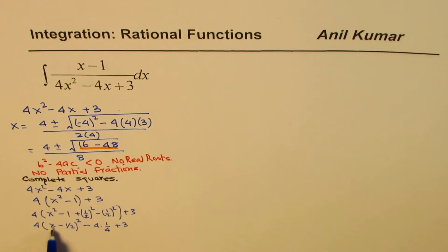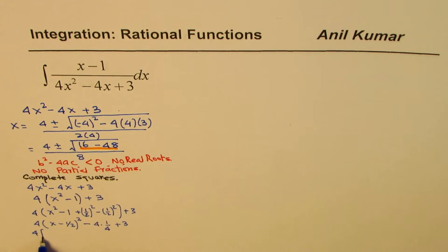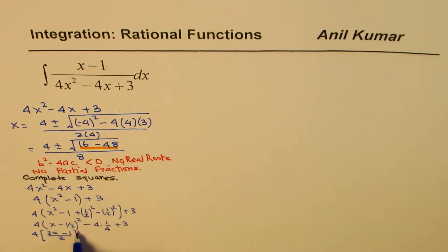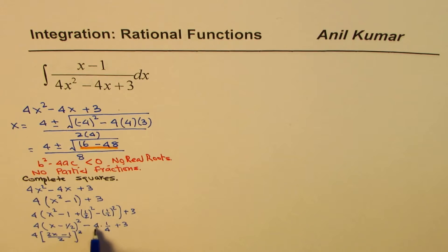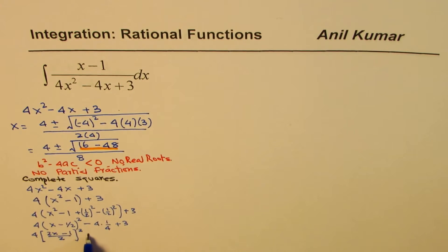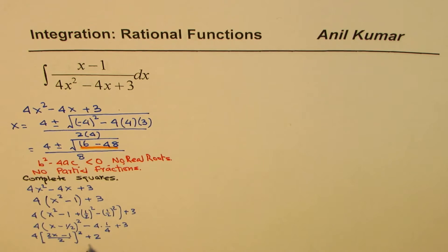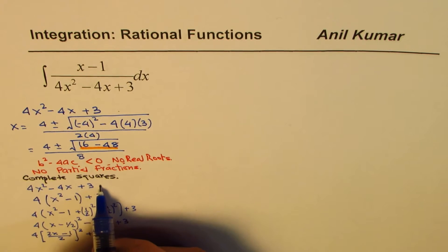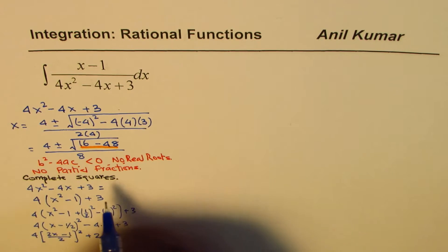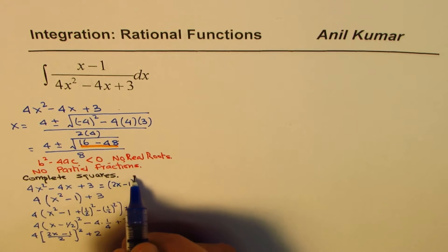This gives us 4 times the quantity x minus one-half, squared. We can write x minus one-half as the quantity 2x minus 1 divided by 2. Squaring that and multiplying by 4, the 4 and the denominator cancel, so we get the quantity 2x minus 1 squared. Then minus 4 times one-fourth plus 3 gives minus 1 plus 3, which is plus 2. So the denominator can be written as the quantity 2x minus 1 squared plus 2.